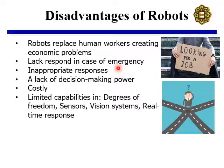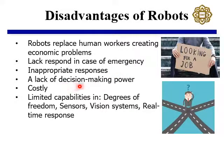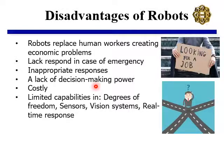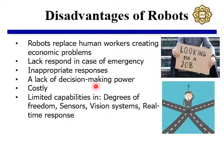So humans still need to intervene in the case of a unique situation. There is a lack of decision-making power for any conventional robotic system. However, with the advances of artificial intelligence technology, in the future industrial robots may also be able to take decisions for different unique situations.